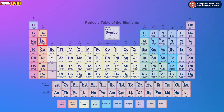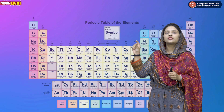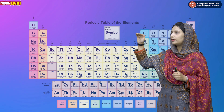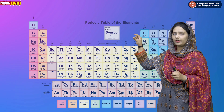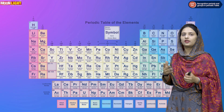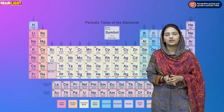In the third period we have sodium, magnesium, aluminium, silicon, phosphorus, sulfur, and chlorine. Moving to the fourth period, we have potassium and calcium. Further, the second period has 8 elements, and the fourth period will have 32 elements.